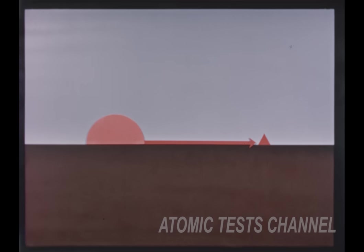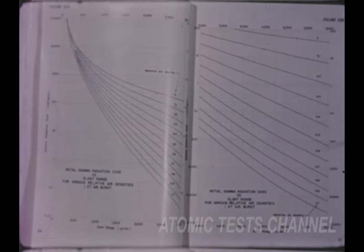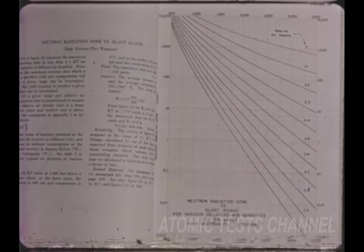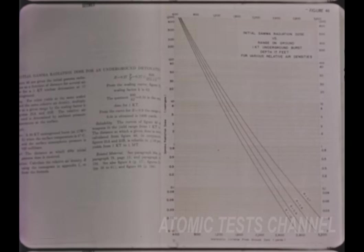Now, the third major weapon effect: nuclear radiation. There is essentially no difference between the dosages from surface and air burst weapons. Thus, the curves given in the manual for initial gamma and neutron radiation from air bursts may also be used for surface detonations. Underground bursts, however, require new curves because they produce much lower dosages at given ranges.